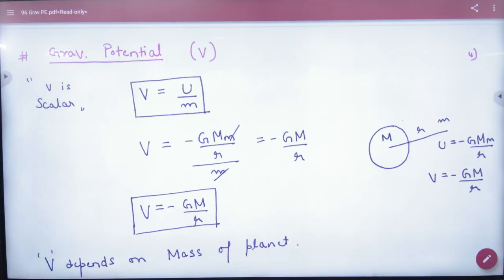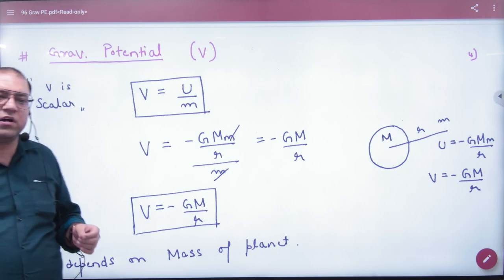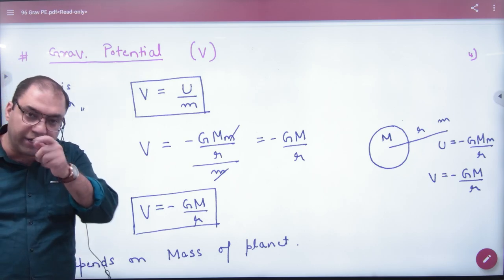Gravitational potential, this is the last term in it. This is a scalar quantity. Potential word you may have heard before, electric potential.